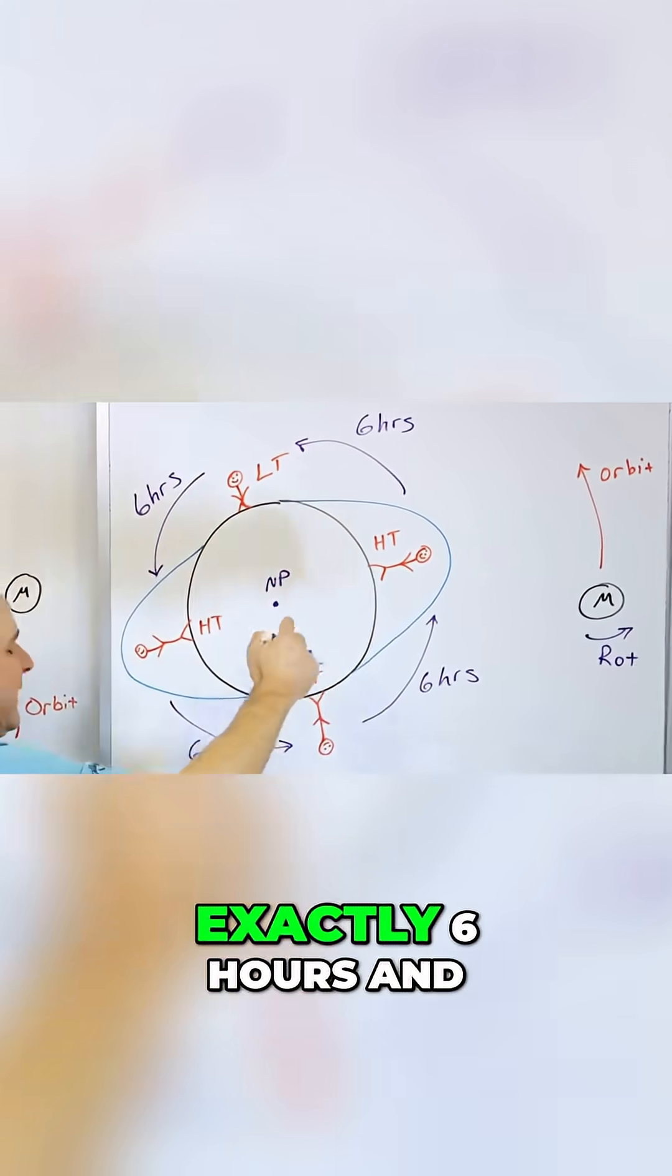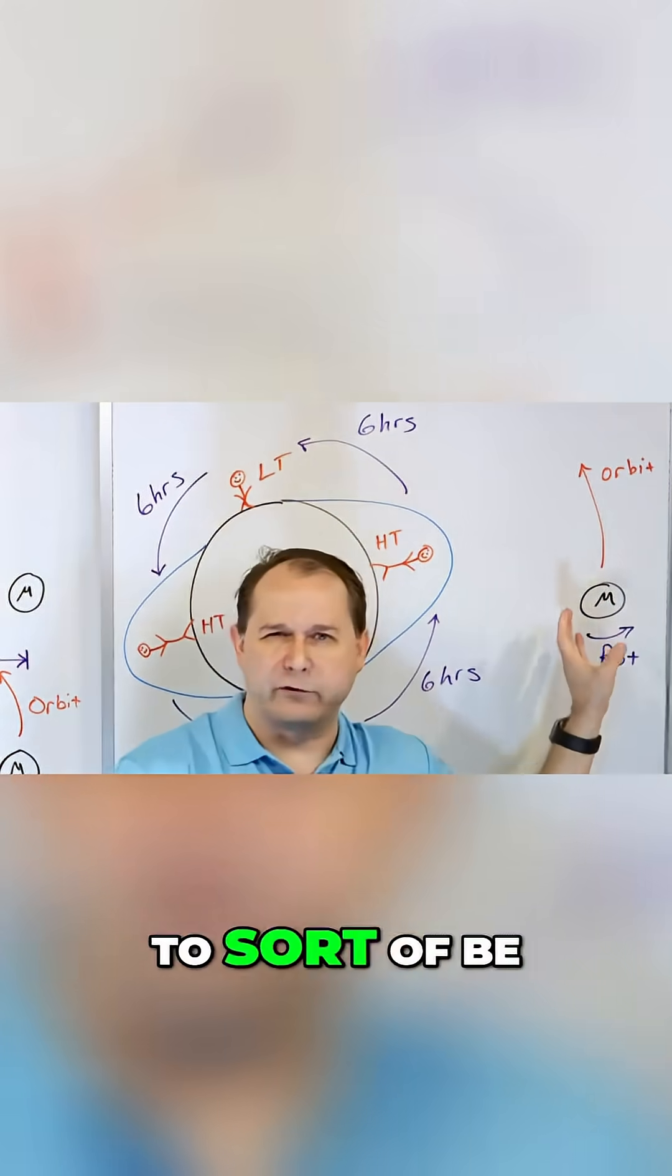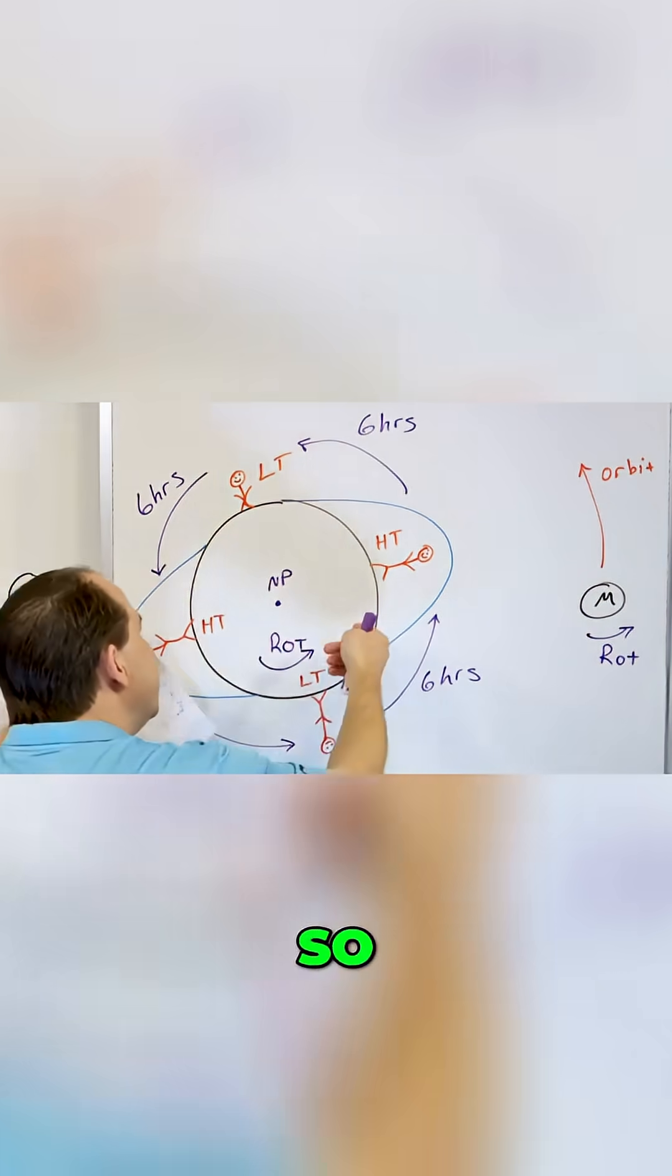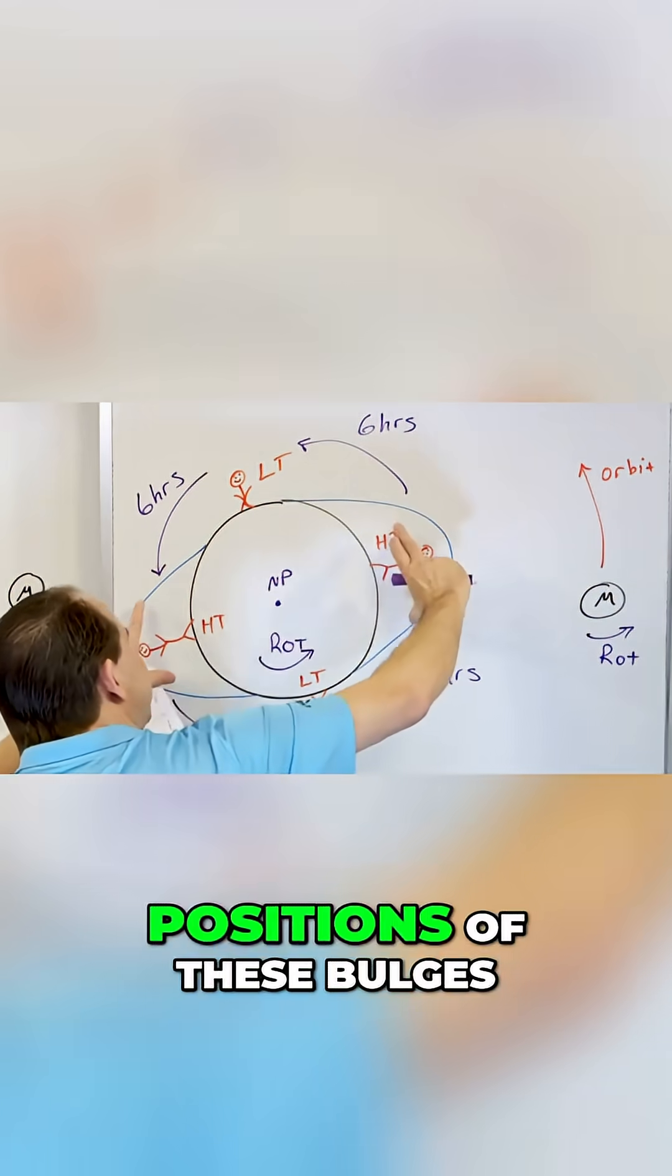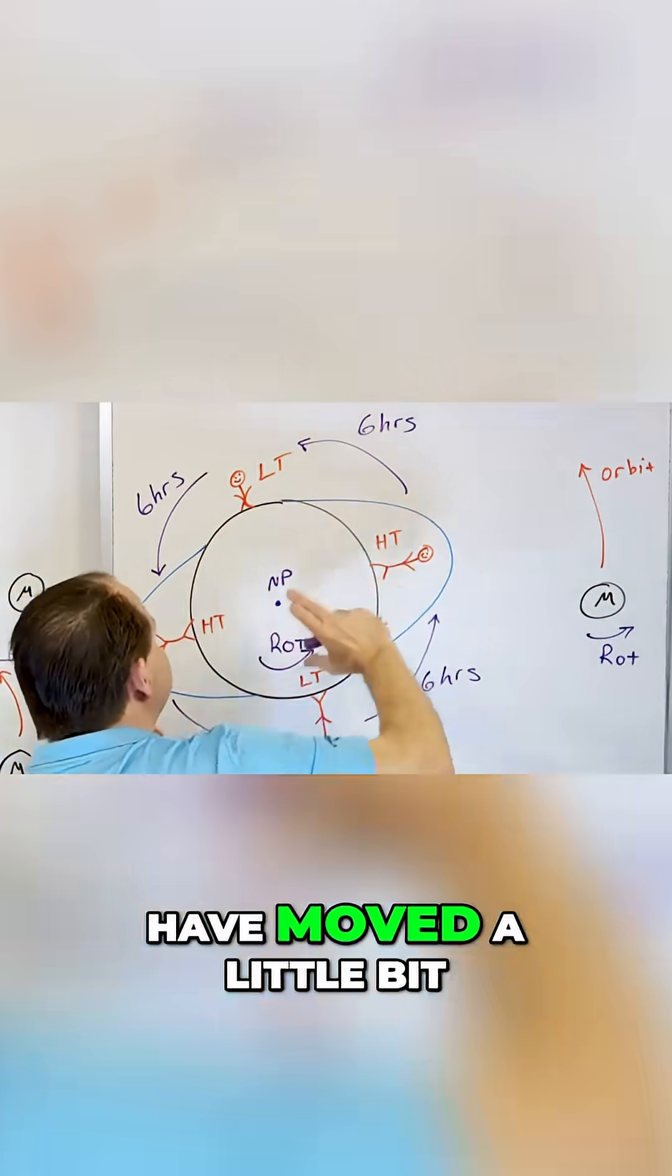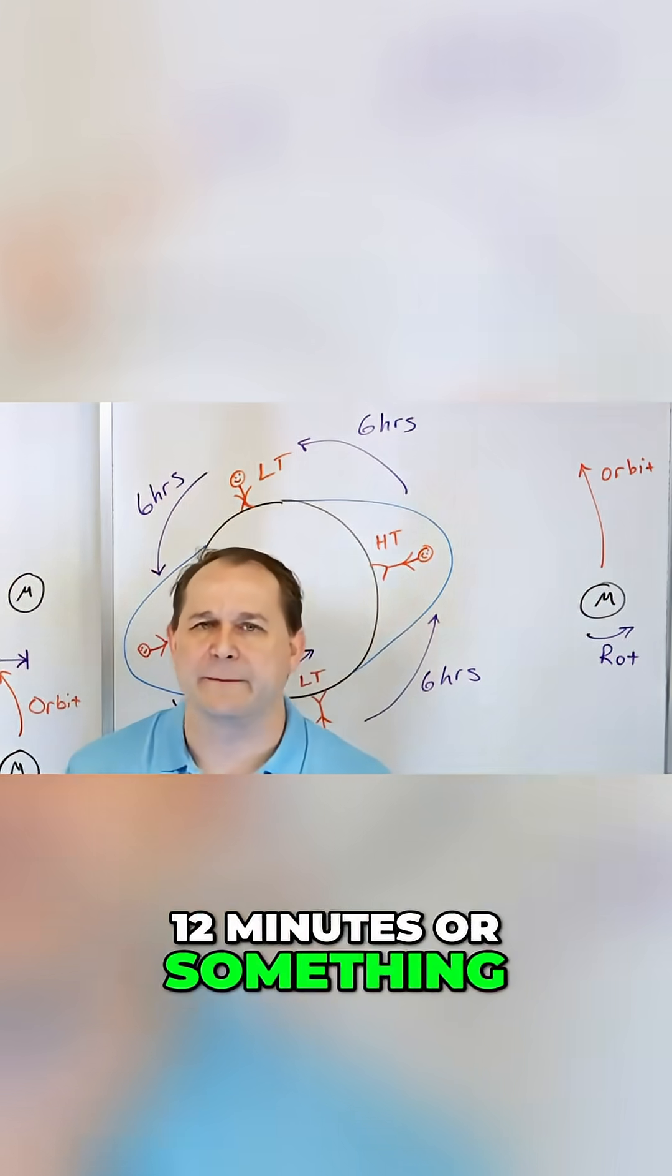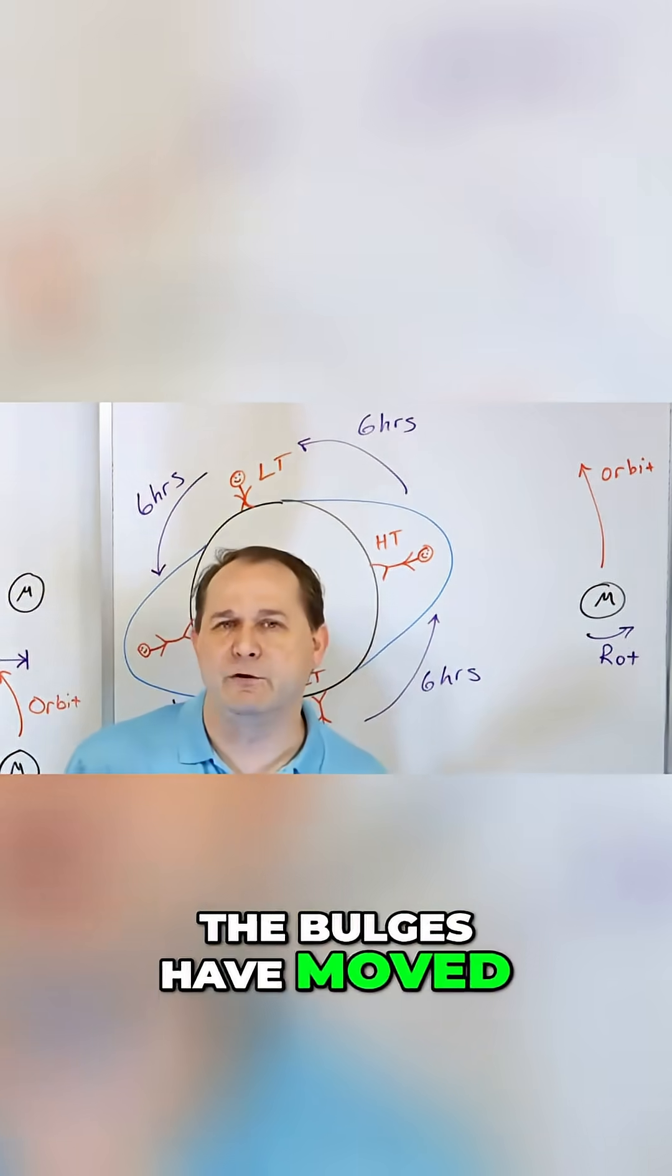Now, I'm rounding here. It's not exactly six hours, and the reason is we're assuming the Moon to be stationary here, but we know the Moon travels through its orbit. So as the Earth rotates one time, the Moon has moved a little, and the positions of these bulges have moved a little bit. So it's really like six hours and 12 minutes or something between the tides, a little bit longer, because the position of the bulges have moved a little bit.